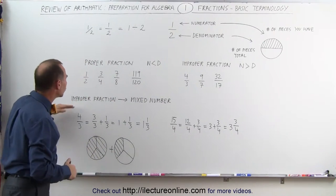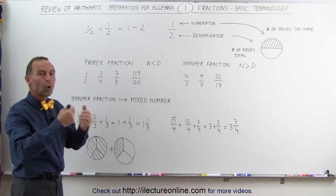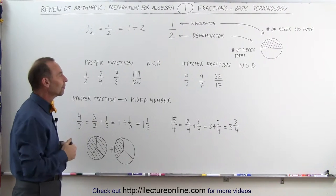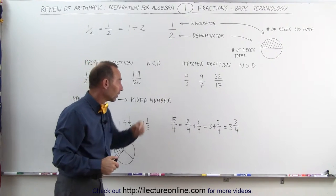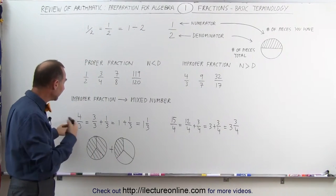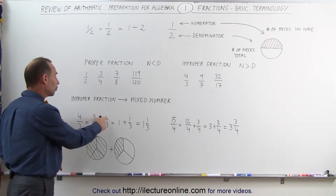Improper fractions can be turned into what we call mixed numbers. We can pull out the whole integer out of an improper fraction. For example, the number 4 thirds, which is this number right here, or this fraction right there, we can think of it as 3 thirds plus 1 third. 3 plus 1 is 4.